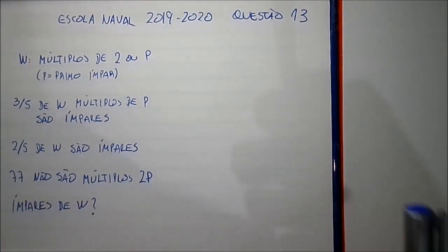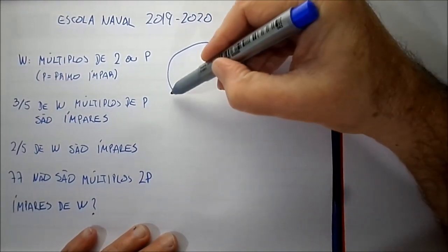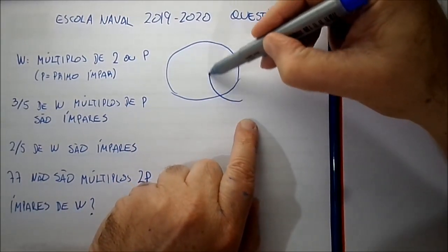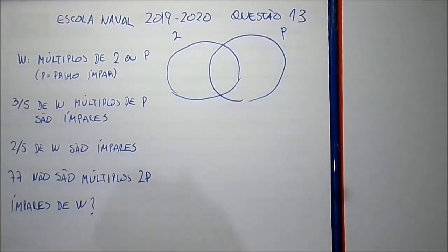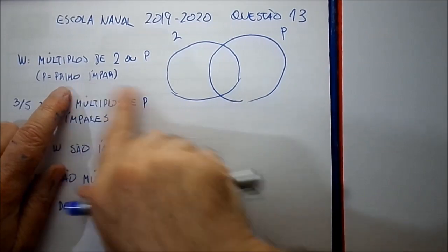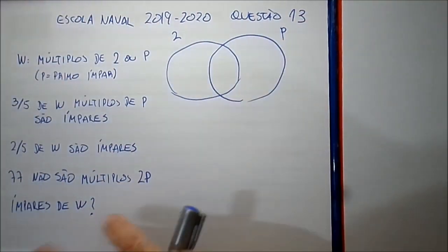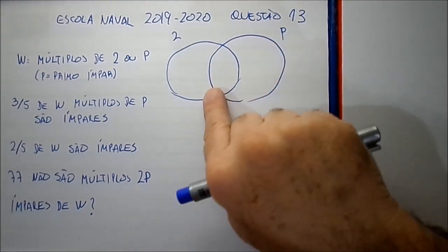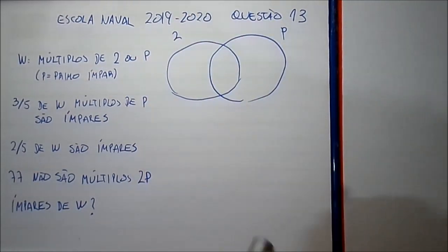Vamos desenhar esse conjunto usando o diagrama de Venn. Nós temos aqui os múltiplos de 2 desse conjunto e aqui os múltiplos de P. Anotamos 2 e P. Ele falou que P é um primo ímpar — claro, se fosse primo par seria 2 e todo mundo seria múltiplo de 2. Então essa interseção aqui são os múltiplos pares de P; aqui você tem números como 2P, 4P, 6P, por exemplo.